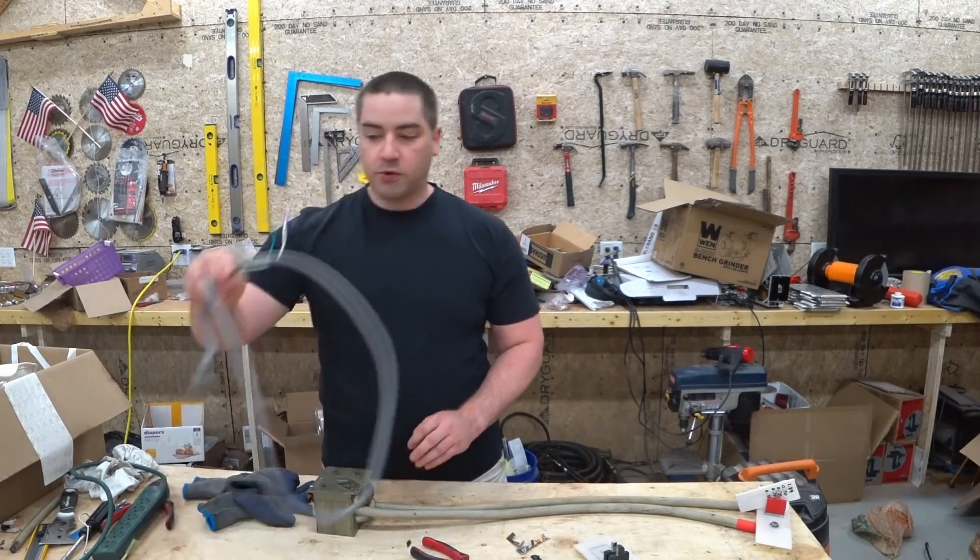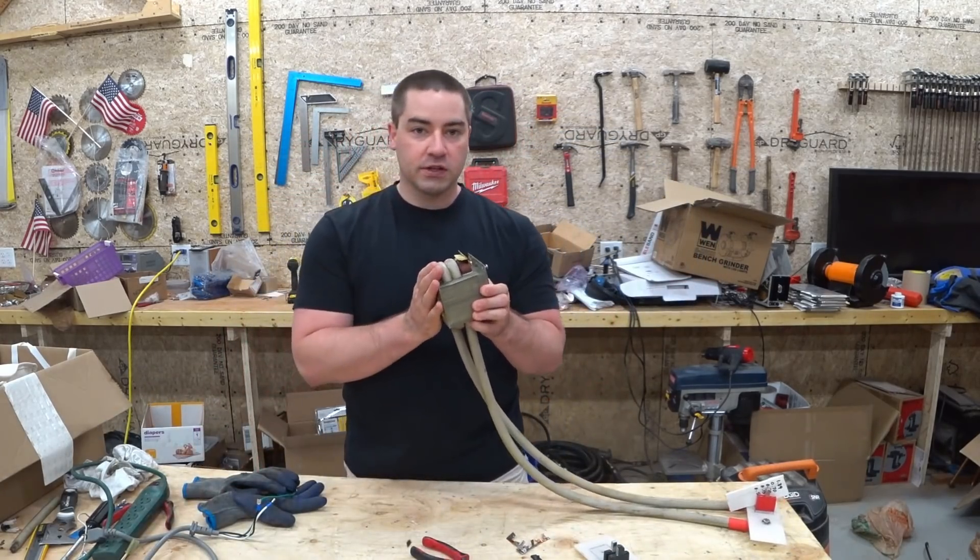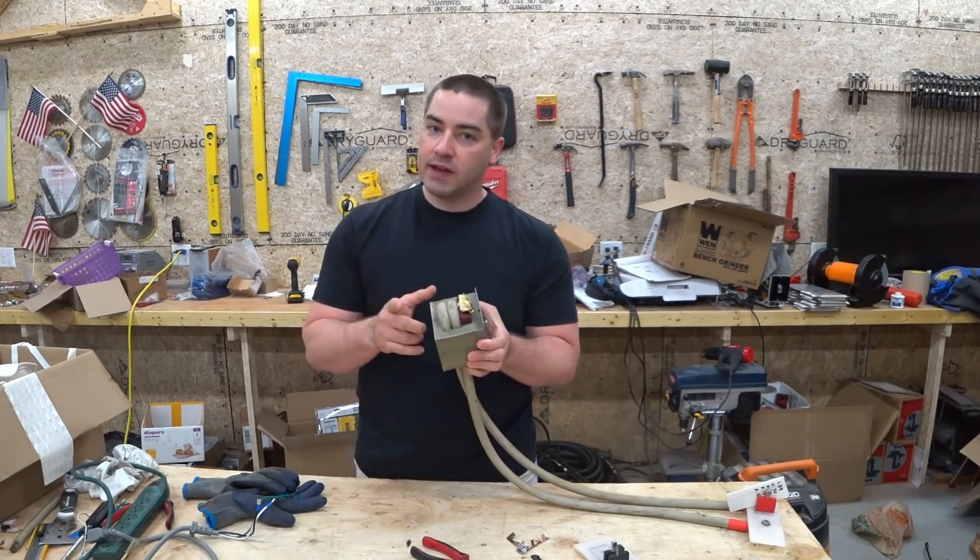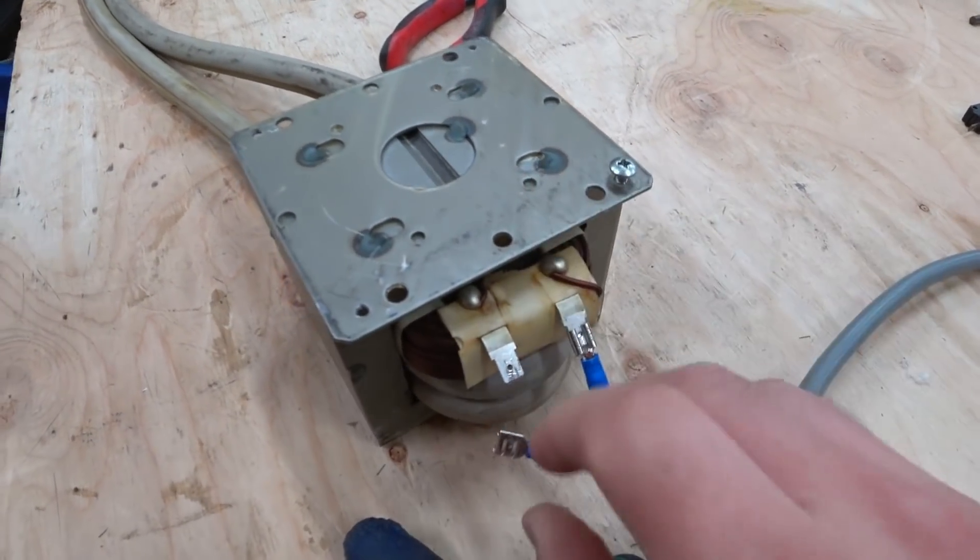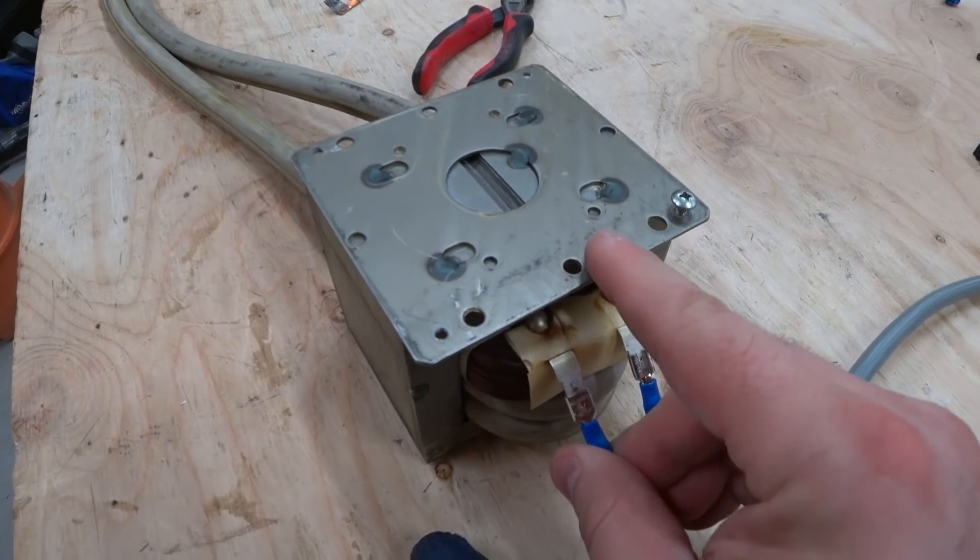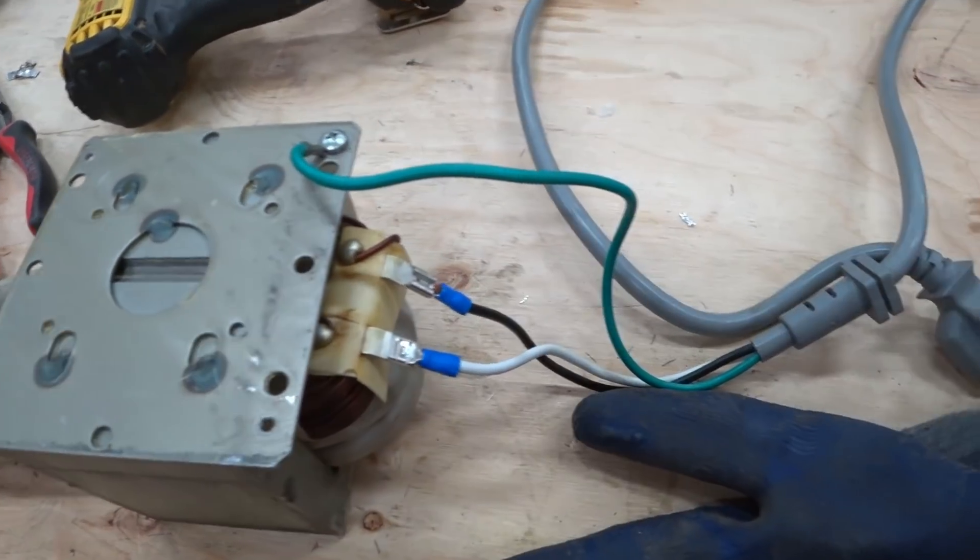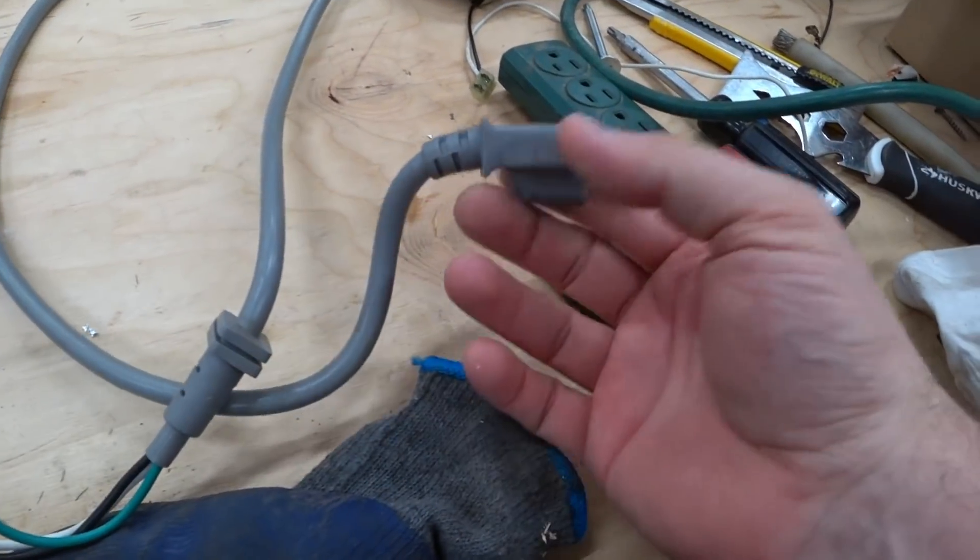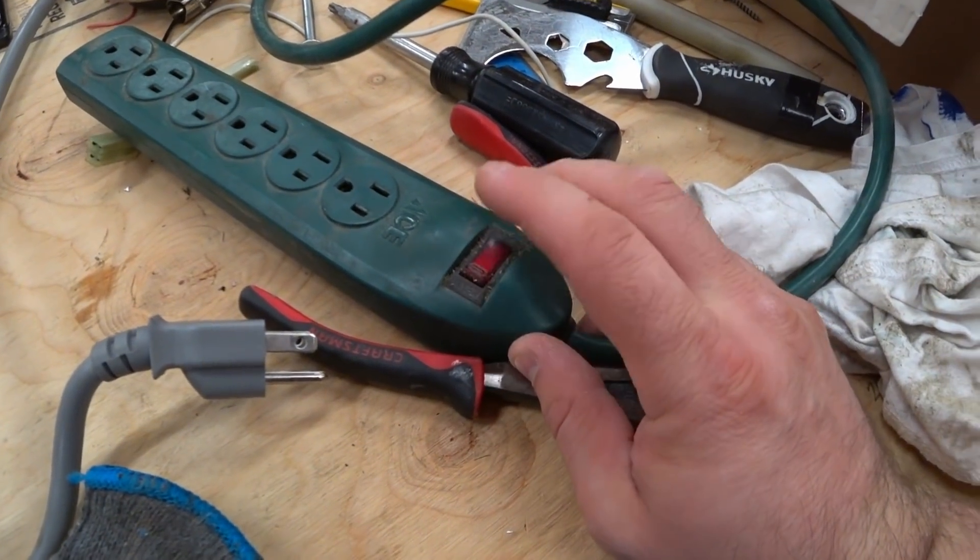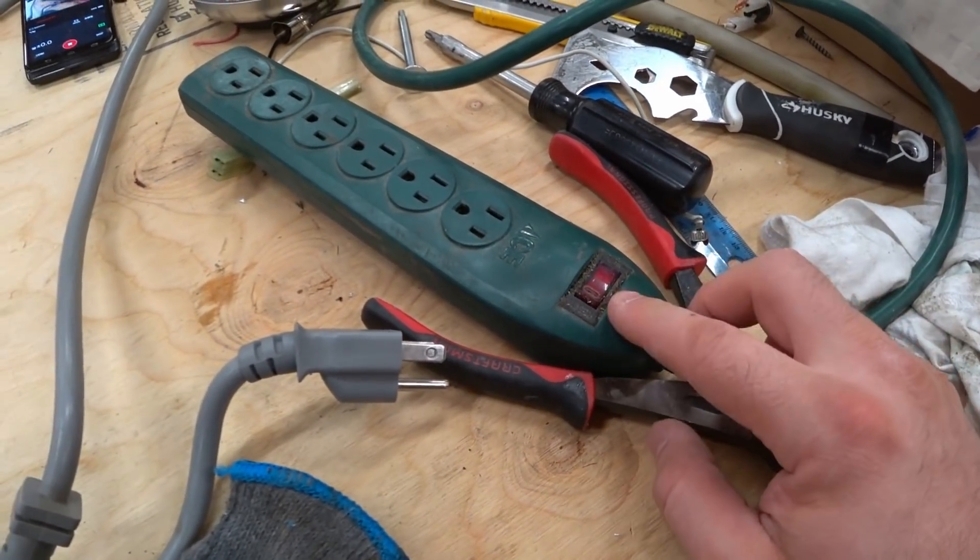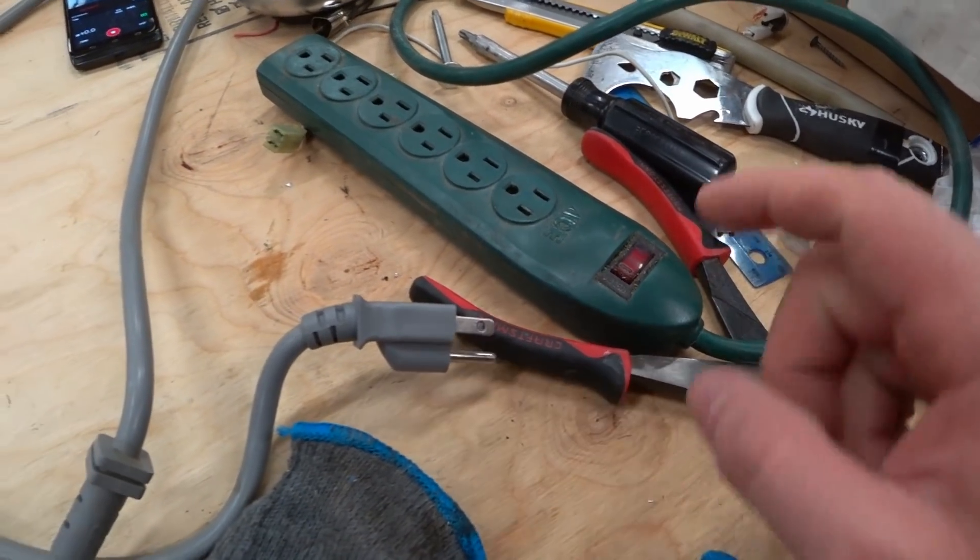When I did hook it directly up to the power cord, the actual power cord from the microwave, and I went directly to the transformer, I was successful, but it takes a while. So let me show you that real quick. So now we have our hot and our neutral, and we're grounded to the end of this plug. And I'm just going to be plugging it into this power strip, and I'm going to toggle this on real quick.